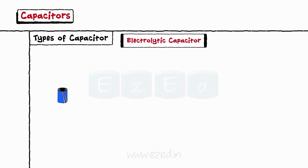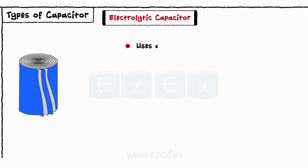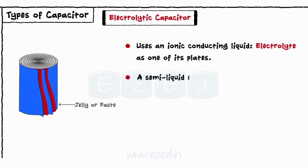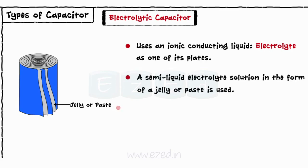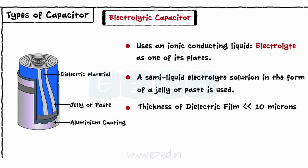The next type of capacitor is an electrolytic capacitor. It is a capacitor that uses an ionic conducting liquid, electrolyte, as one of its plates. Here, a semi-liquid electrolyte solution in the form of a jelly or paste is used. The dielectric is a very thin layer of oxide which is grown electrochemically in production with the thickness of the film being less than 10 microns. The entire structure is coated with aluminium and two terminals are taken out for connections.